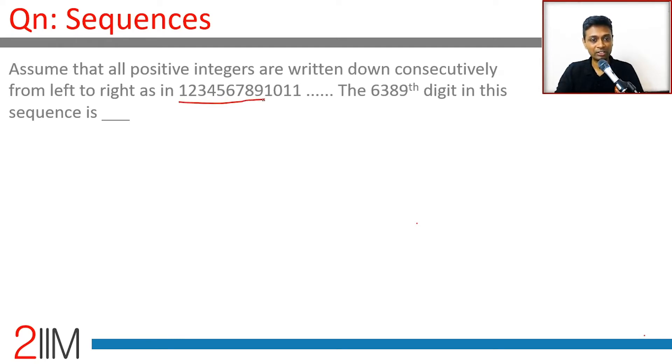First of all, the first 9 digits are single digit numbers. Then 2-digit numbers start. The 2-digit numbers are going to end with 99. I want to think about how many digits in this number go by when you are thinking about 2-digit numbers.